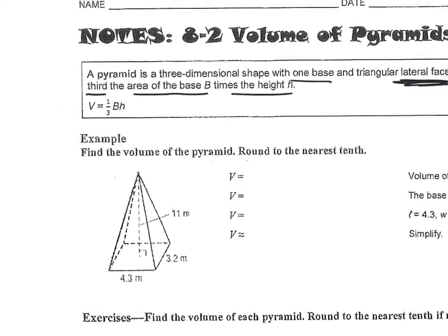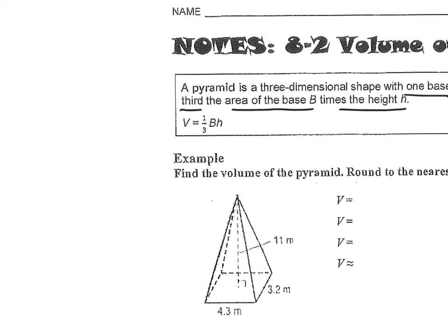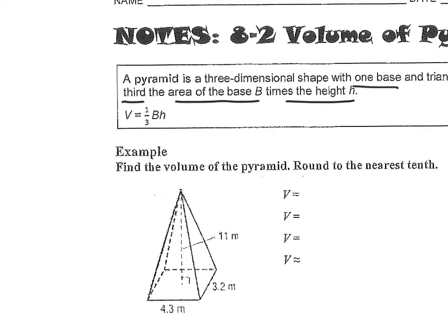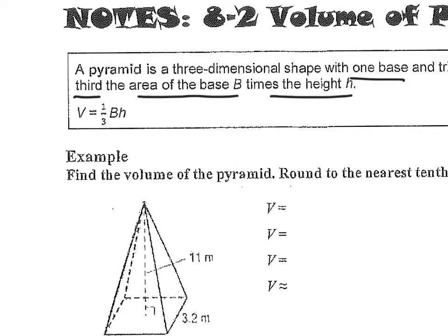It's the same as those other volume formulas we've looked at — area of the base times the height. The only difference is that one-third. To make it a little bit easier: area of the base times the height of the pyramid divided by three.